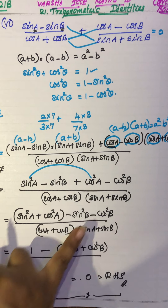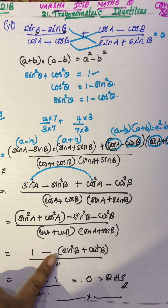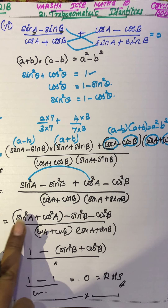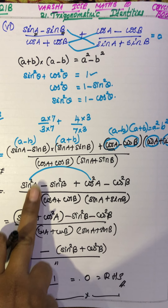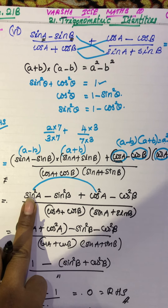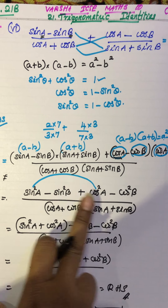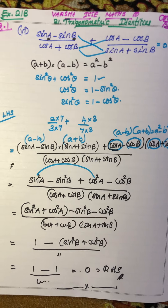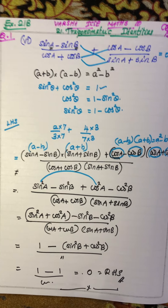So taking minus as common and grouping sin²A + cos²A gives 1, and sin²B + cos²B gives 1. That grouping is all that is needed. I hope you all understand. Thank you.